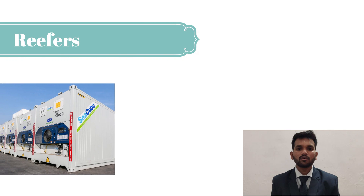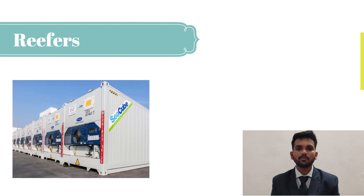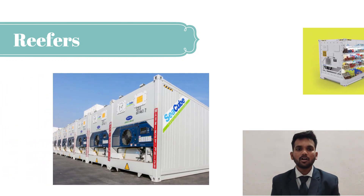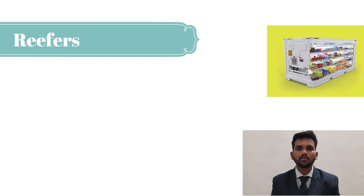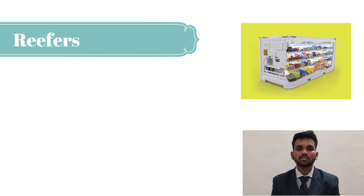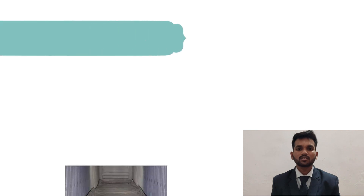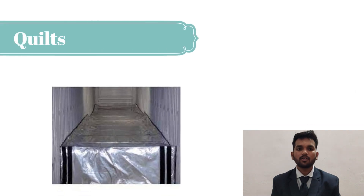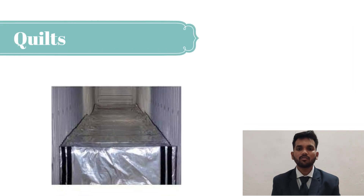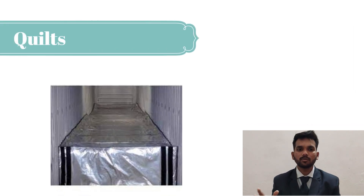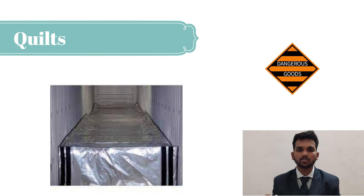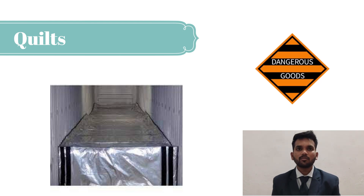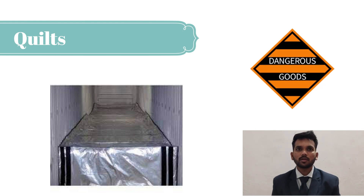A temperature-controlled insulated van, semi-truck, or standard ISO container allows for temperature-controlled air circulation. Insulated quilts can be wrapped around or placed over freight and are used to keep temperatures constant, so frozen items will remain frozen for a longer time.